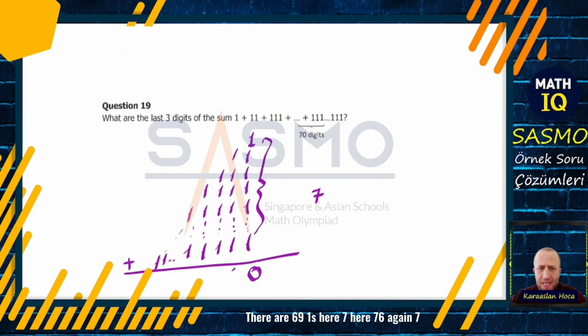Here 7, here 76, again 7. There are 68 ones, and we have 7, 75. And it will continue like this. For calling us the last 3 digits, we don't need to calculate the rest. The answer we are looking for is 560.